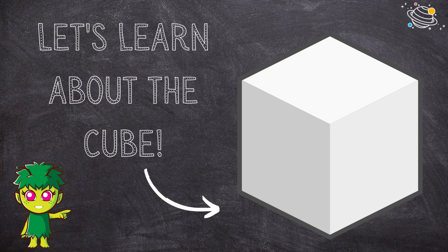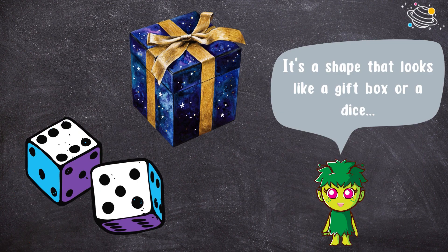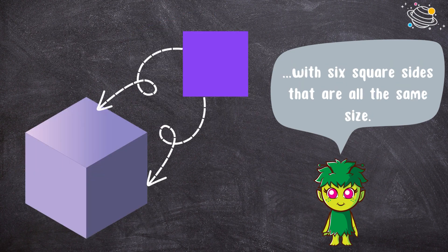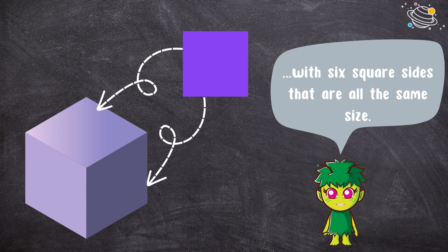Let's learn about the cube. It's a shape that looks like a gift box or a dice, with six square sides that are all the same size.